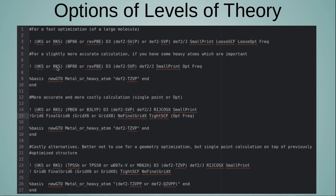For slightly more accurate optimizations, use the same setup but without loose SCF and loose opt, and you can add better basis sets on metal or heavy atoms of interest — for example, SVP on chlorine, phosphorus, or similar — or TZVP if a metal center is important.